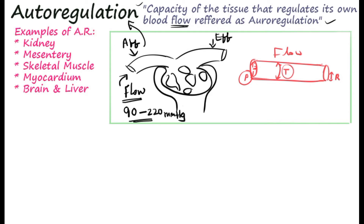The examples of autoregulation are seen mainly in the kidney, mesentery, skeletal muscle, myocardium, brain, and liver. These are the major organs where the autoregulatory process is usually seen.